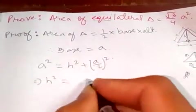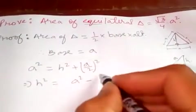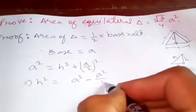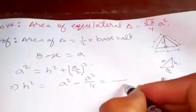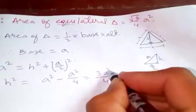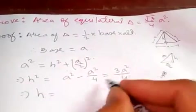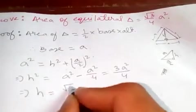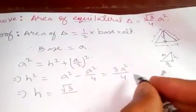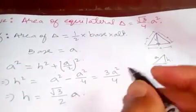Since we need to find h, we get h² = a² - a²/4. If you simplify this, it's 3a²/4. So if you find h, it's √3/2 × a, where 'a' is the side of this triangle.